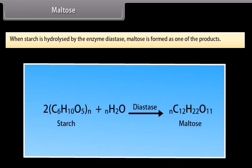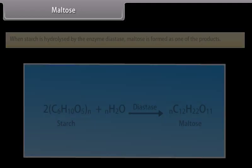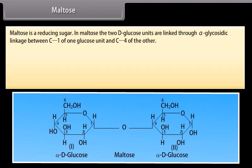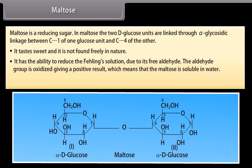Maltose: When starch is hydrolyzed by the enzyme diastase, maltose is formed as one of the products. On hydrolysis with dilute acids, one mole of maltose yields two moles of D-glucose. Maltose is a reducing sugar. In maltose, the two D-glucose units are linked through an alpha-glycosidic linkage between C1 of one glucose unit and C4 of the other. It tastes sweet and is not found freely in nature. It reduces Fehling's solution due to its free aldehyde group. In aqueous solution it exhibits mutarotation.